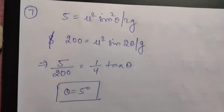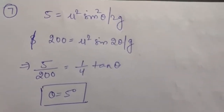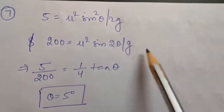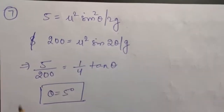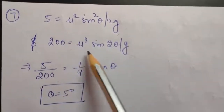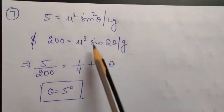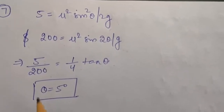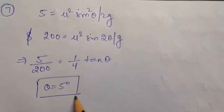The horizontal range is given as 200 metres, and the formula for horizontal range is R = u² sin 2θ / g, which equals 200. Now divide these two equations: 5/200. The u² will cancel out, and when you solve it you will get (1/4) tan θ. Put sin 2θ = 2 sin θ cos θ, and when you again solve it, θ comes out to be nearly equal to 5 degrees.